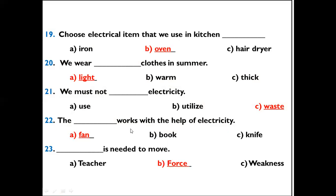Question 22: The dash works with the help of electricity. Options: Fan, book, knife. The right option is fan. The fan works with the help of electricity.